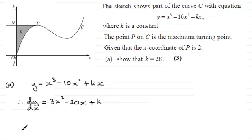Now we know that at P, the gradient because it's a maximum is going to be zero, and we know that all this happens when x equals 2.